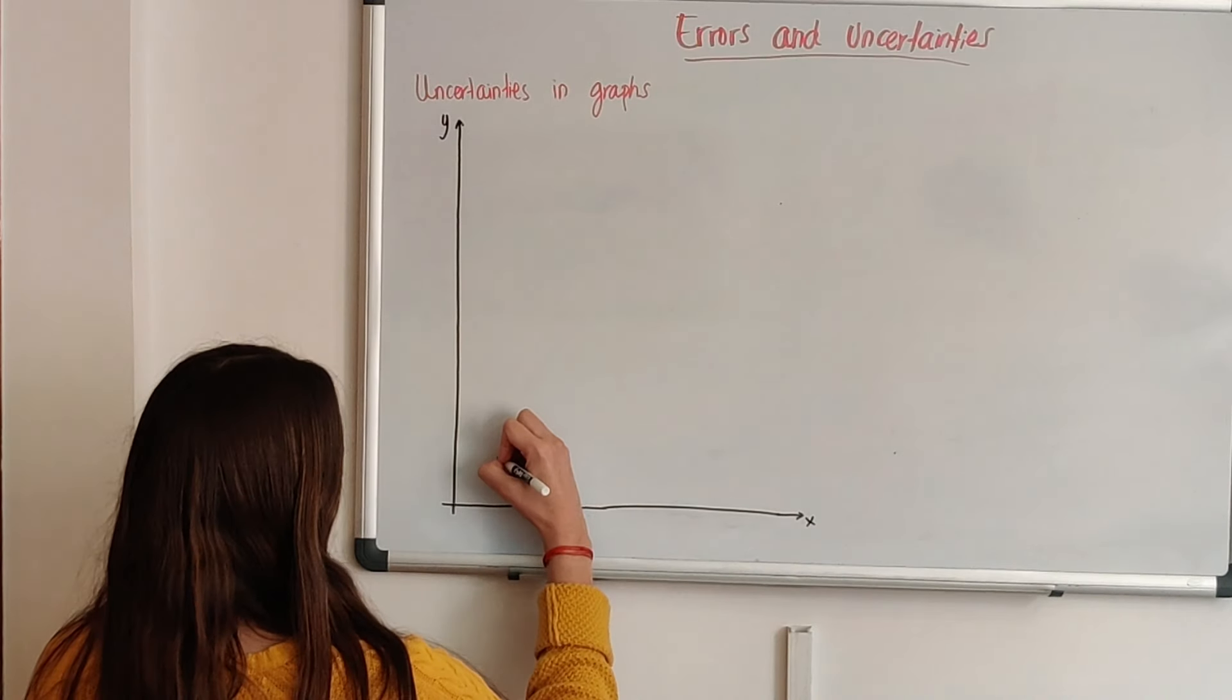Usually we do it by eye and that one can have more than one right choice. But if we're doing it precisely, there's going to be just one. So how do we get to that line?